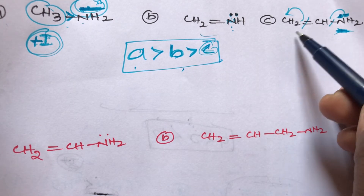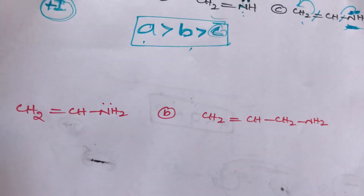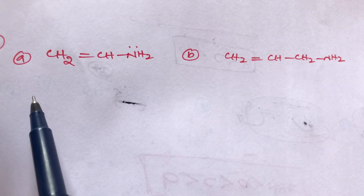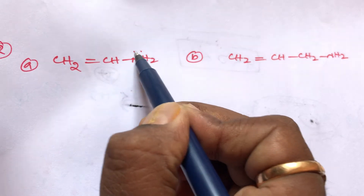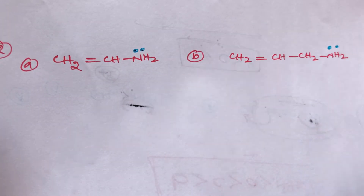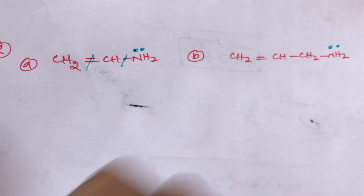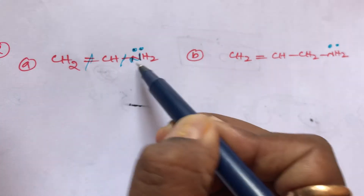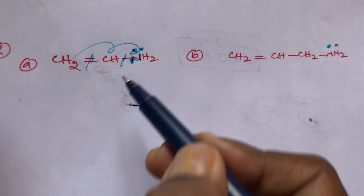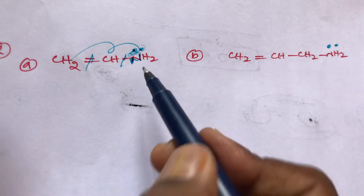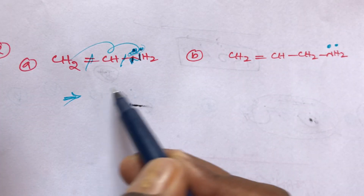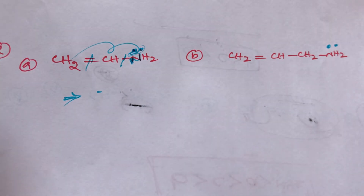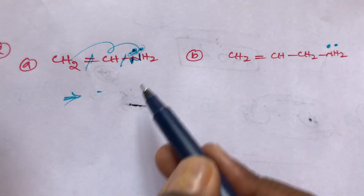Now take another example. Out of these two compounds, which one has more basic strength? The first compound is CH2 double bond CH single bond N, with one lone pair on nitrogen. Here conjugation is present — double bond, single bond, lone pair. This lone pair is involved in the resonance, so the density completely disappears on nitrogen. There is no negative charge, no density in the first compound.